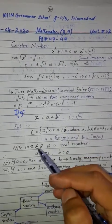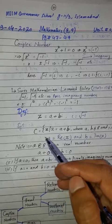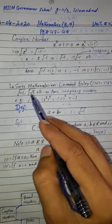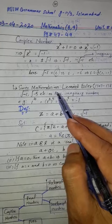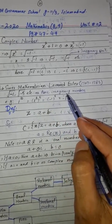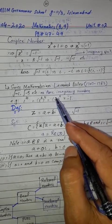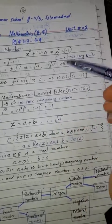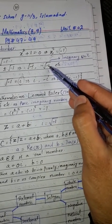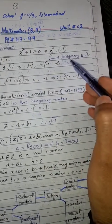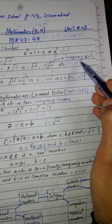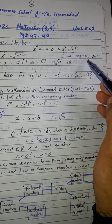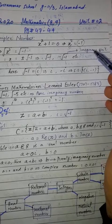Now we define complex numbers. The Swiss mathematician Leonhard Euler worked on this in the 18th century. The quantity square root of minus 1 is called the imaginary unit, denoted by iota. Numbers like the square root of minus 5 are called pure imaginary numbers — they are not real numbers.